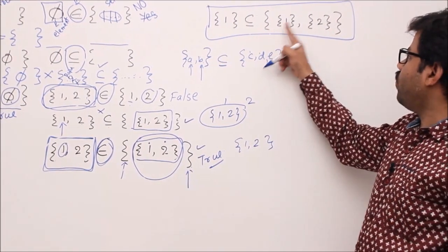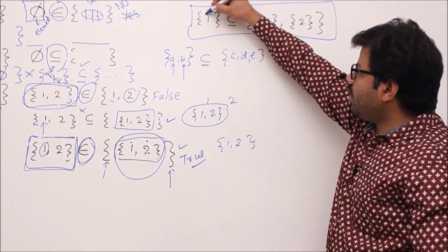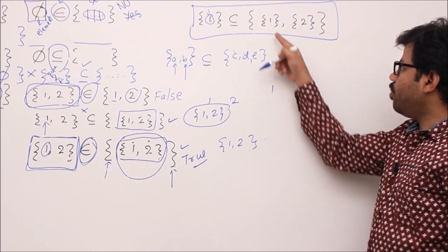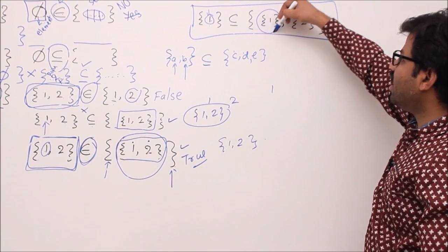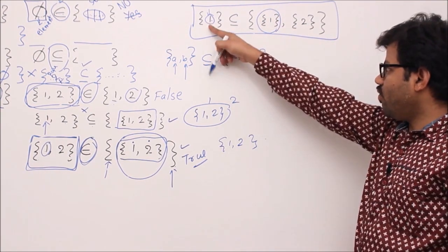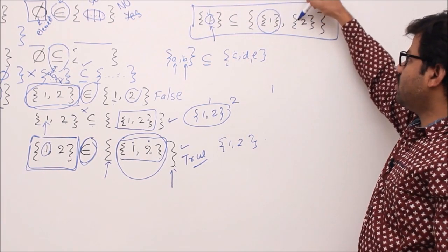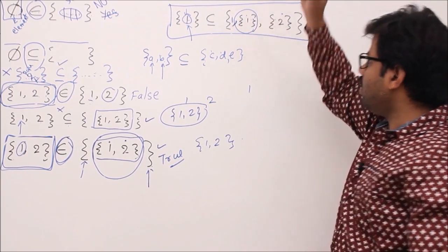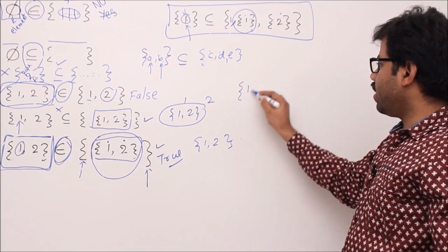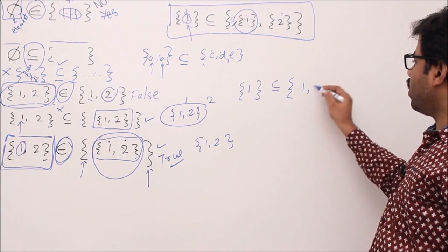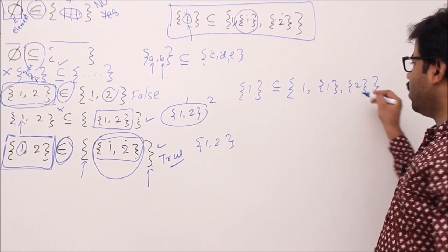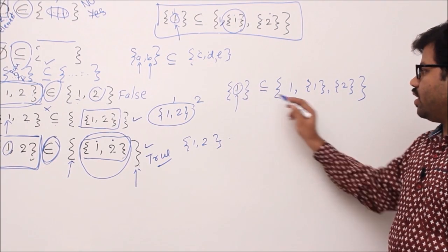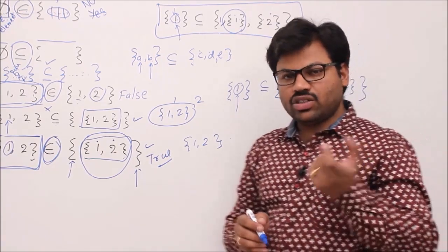Now: {1} ⊆ {{1},{1,2}}. For subset or equal to, take each element of the left side. The element is 1. Is 1 a member of the right side? Students get confused — you are not seeing 1 as a bare element, you are seeing {1} and {1,2} as the members. So 1 is not a member of {{1},{1,2}}. To say 1 is a member, you would need to add 1 directly. So: {1} ⊆ {1, {1}, {1,2}} would be true, but the original is false. If you understand 'belongs to' and 'subset or equal to', you can understand set theory concepts.